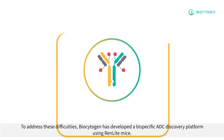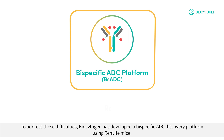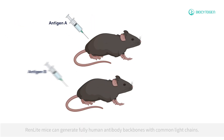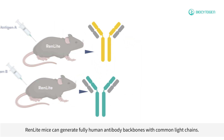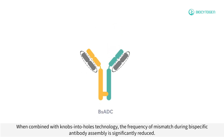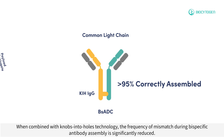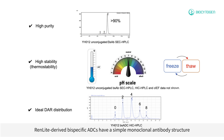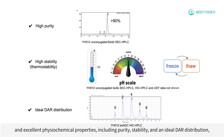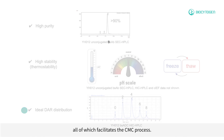To address these difficulties, Biocytogen has developed a bispecific ADC discovery platform using RenLite mice. RenLite mice can generate fully human antibody backbones with common light chains. When combined with knobs-into-holes technology, the frequency of mismatch during bispecific antibody assembly is significantly reduced. RenLite-derived bispecific ADCs have a simple monoclonal antibody structure and excellent physiochemical properties, including purity, stability, and an ideal DAR distribution, all of which facilitates the CMC process.